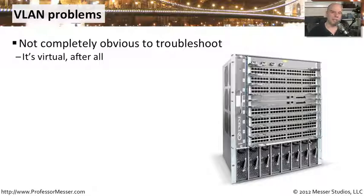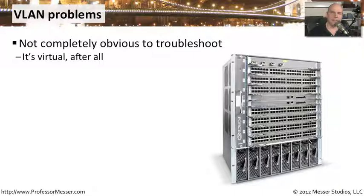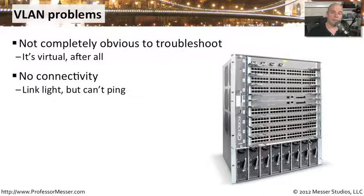The issue, of course, is that if you have a configuration issue relating to a VLAN, it might be a little bit more difficult to troubleshoot. You're going to have to go through the entire configuration of the switch or configuration on a per-port basis to determine if you have the correct VLANs in the correct place. You'll often see problems with this based on connectivity — you've plugged in a brand new server, assigned it a static IP address, plugged it into the switch, it's got a link light, but it can't ping anything.